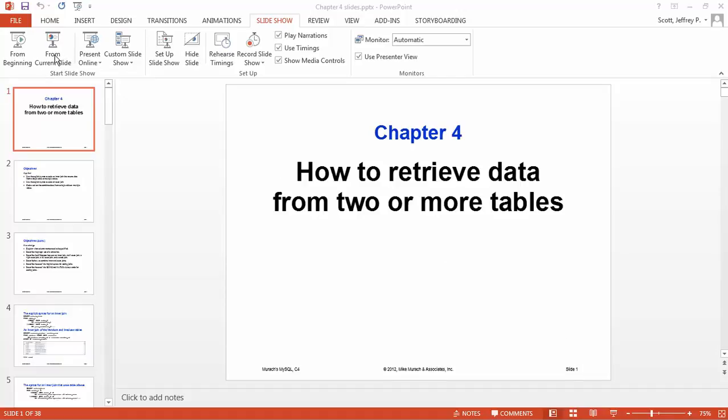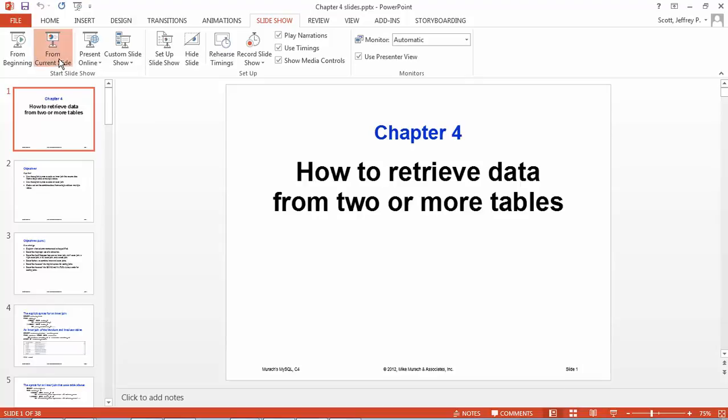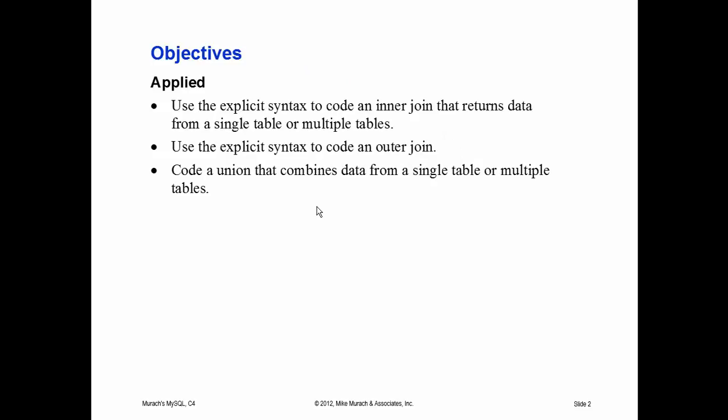This is Chapter 4: How to Retrieve Data from Two or More Tables, which is going to involve what is referred to in Relational Database Technology or RDBMS as a join. First we'll talk about an inner join because those are the ones that are done most often. You can do an inner join on as many tables as you need to, including just one table — joining the table onto itself, which is called a self-join.